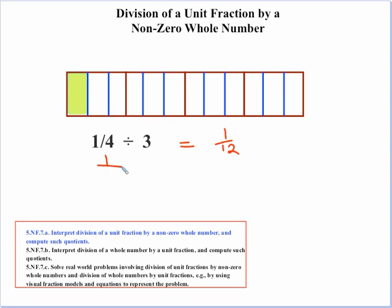Let's investigate. We start off with one-fourth and we end up with one-twelfth. We ended up with a twelve in the denominator, and we know that four times three is twelve. So we had to have multiplied by three in the denominator and by one in the numerator. Somehow one-fourth divided by three got converted to multiplication by one-third instead of three over one — which is the reciprocal.